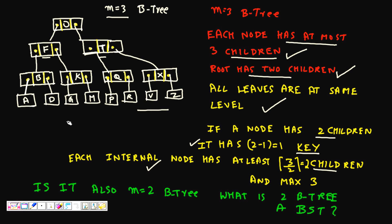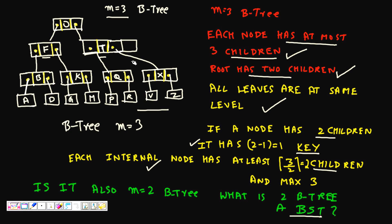This B-tree of order 3 is also of order 2, meaning it is also a valid binary search tree. So this shows one example of a B-tree with M=3. You could also add more elements here; for example, there are positions where additional keys could be inserted.